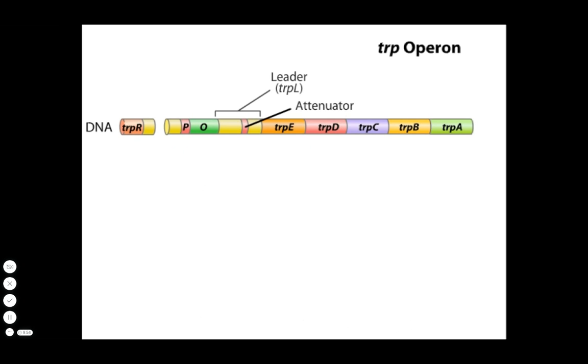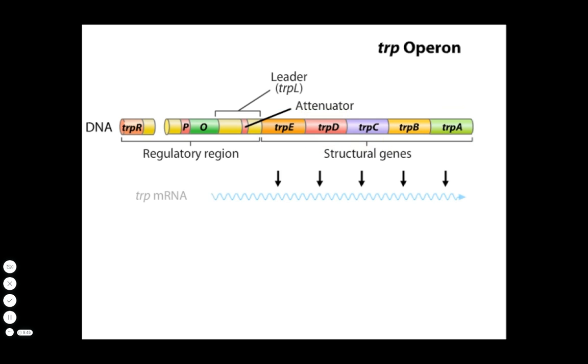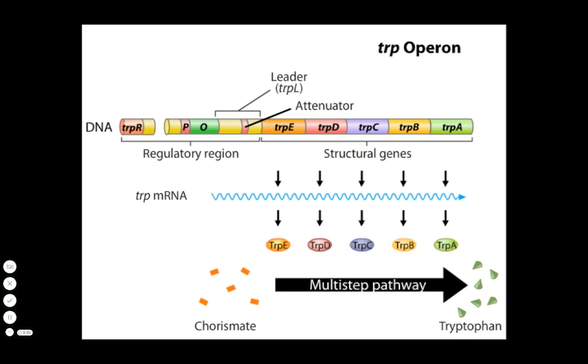In E. coli, the trp operon consists of the structural genes trpE, D, C, B, and A, the gene products of which are enzymes that convert the chemical chorismate to the amino acid tryptophan.